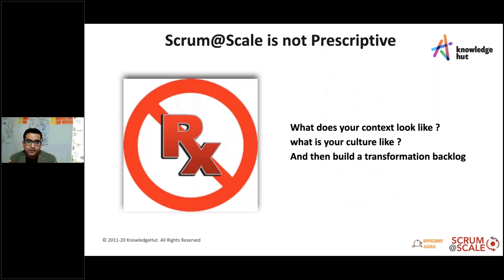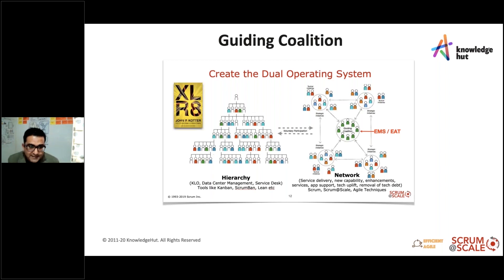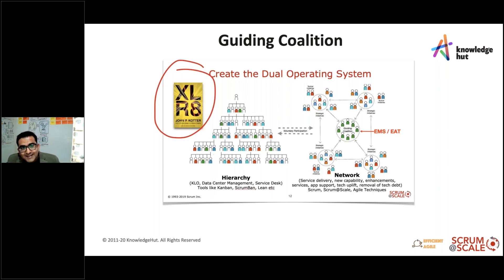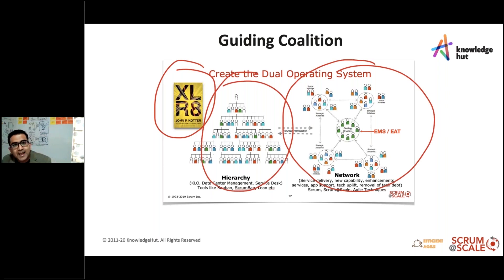To do all this we need a guiding coalition, which most scaling frameworks talk about. Looking at this diagram — from the book 'Accelerate' by John P. Kotter — he talks about creating a dual operating system. When you do a transformation, a big-bang approach will never succeed. It's always good to start with a small set of teams, called a reference model, and then scale it. In any organization you can see a mix of hierarchical systems, and when you implement a scaling framework you build a network of teams — a scalable reference model.